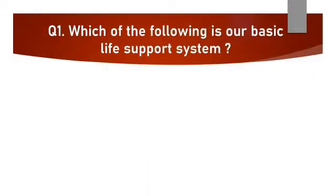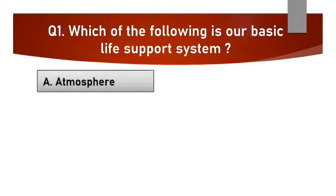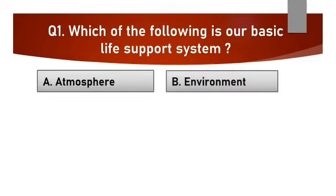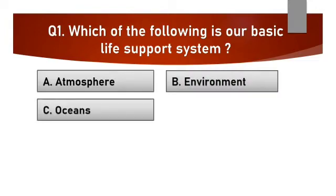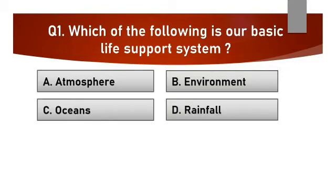Question number 1. Which of the following is our basic life support system? Option A: Atmosphere. Option B: Environment. Option C: Oceans. Option D: Rainfall.